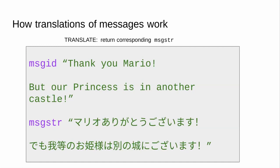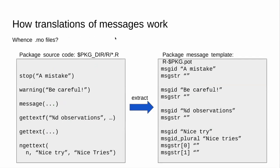We look up the message ID and find the corresponding translation. The Japanese translation for the Mario message is actually a fictional example here — that game was so old that in Japan the message was left in English because writing those characters on such an old computer was too difficult, and enough people understood English that they left it as-is. So the .mo file is how things work in real time: we look up the MO file, get the message, and get the translation.